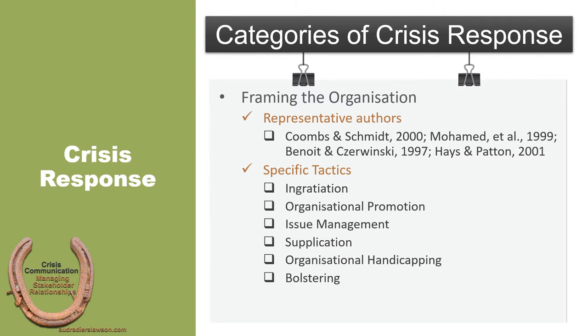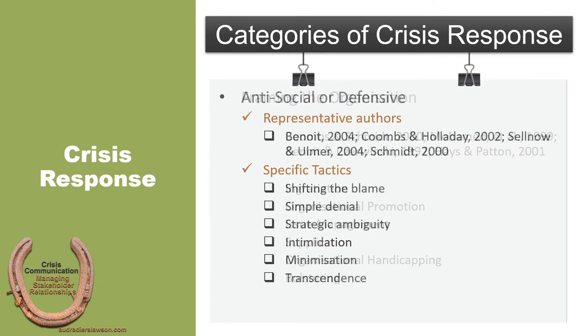In addition to trying to define the crisis for their stakeholders, organizations may also choose to incorporate crisis response strategies that frame the organization. In this way, they're making claims about the character of the organization as a way to potentially minimize negative effects of the crisis. This next approach is quite different because the antisocial or defensive tactics center on minimizing blame attribution with a range of tactics from denial to obfuscation to fairly aggressive tactics like intimidation. There's been a lot of research devoted towards these types of crisis response strategies, and a number of strategies have consequently been identified that typify an organization's communicative effort to basically cover themselves or refuse to admit culpability for the crisis.